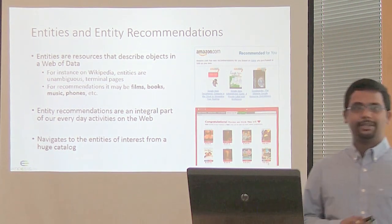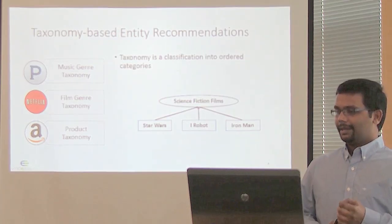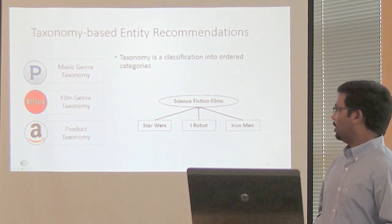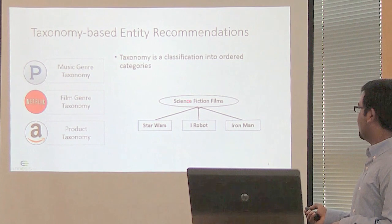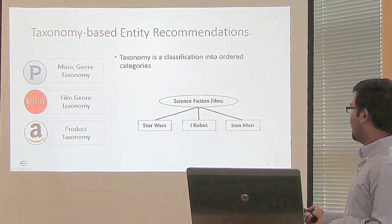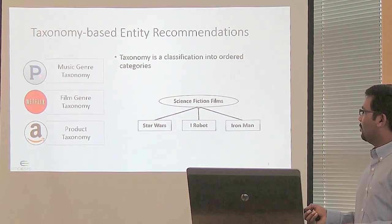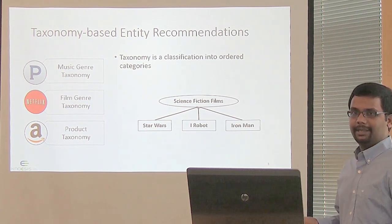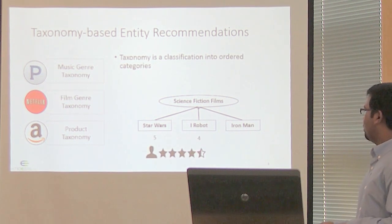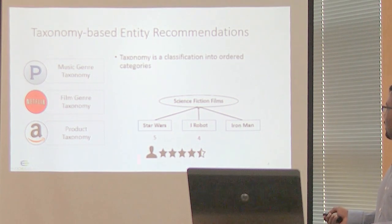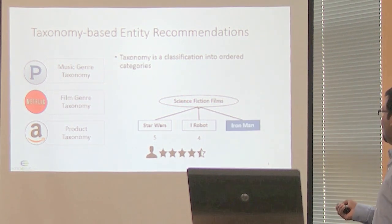Taxonomies have been utilized for entity recommendations. A taxonomy is a classification into ordered categories. For example, films can be classified into science fiction films, and this category can further be categorized into films by genre. Such taxonomies have been utilized by popular applications like Pandora, Netflix, and Amazon. If a user has rated two movies on a scale of five, we can recommend other entities belonging to this category, such as Iron Man.